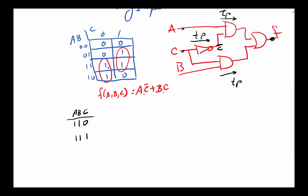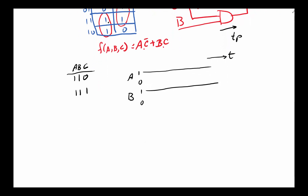To show propagation delay, it's best to use a timing diagram, where the horizontal axis is time. In this case, a is 1 and stays 1; b is 1 and stays 1. The only thing that changes is c — c was 1 at some point, goes low, and that's it. Our expectation is that the output will stay high all the way through this transition.